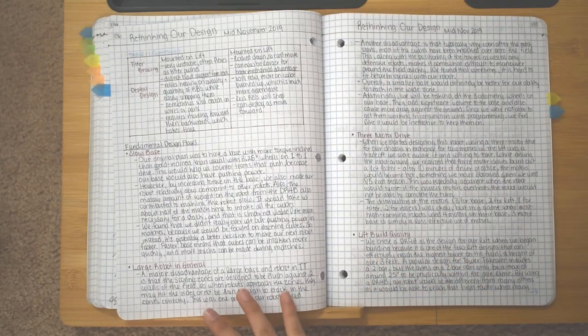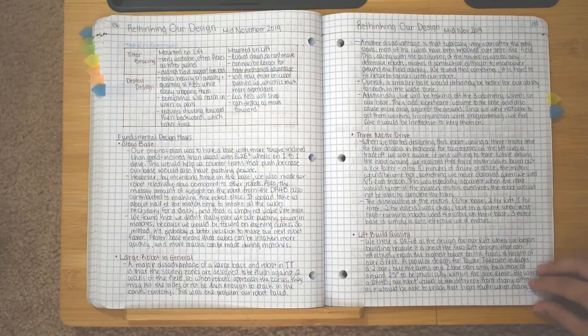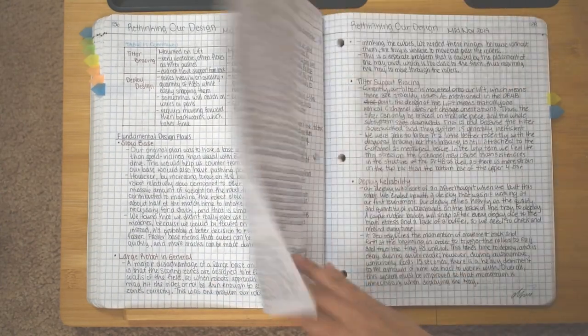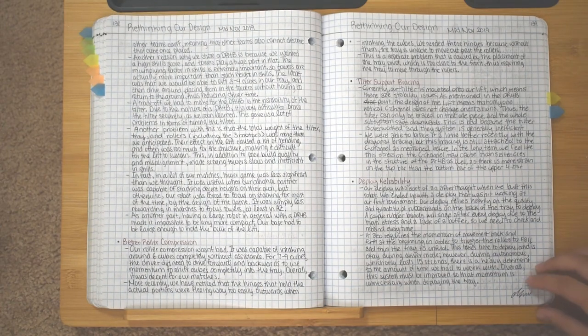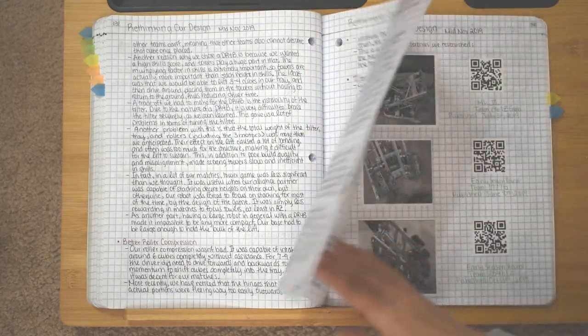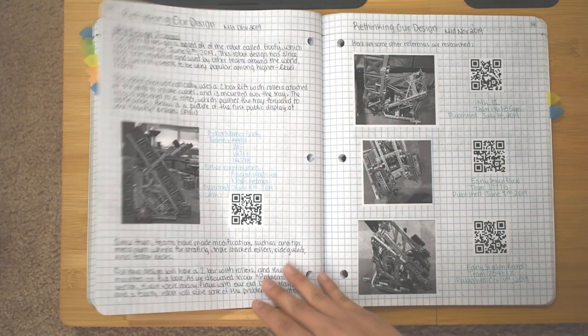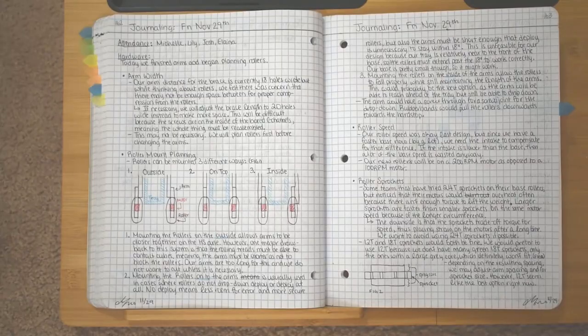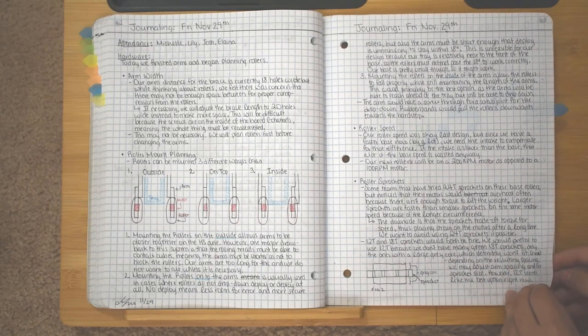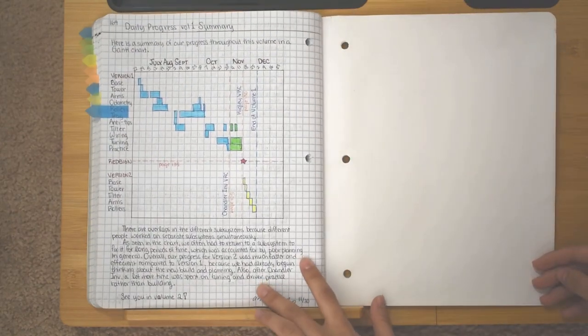This entry was a major design update for us, as it talks about a major choice that we made during early season. Titled Rethinking Our Design, it explains our thought process and reasoning behind the decision, as well as our plan moving forward from this point, and citations for the references we researched. We really wanted to express to the judges why we felt the need to completely scrap our old robot and build something new within a short window of time.